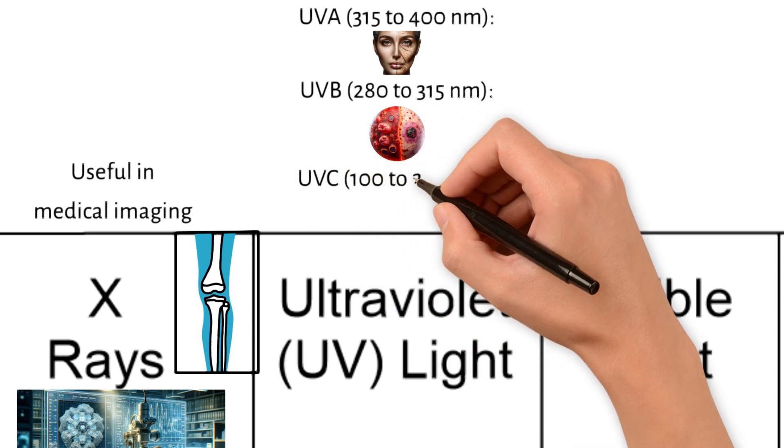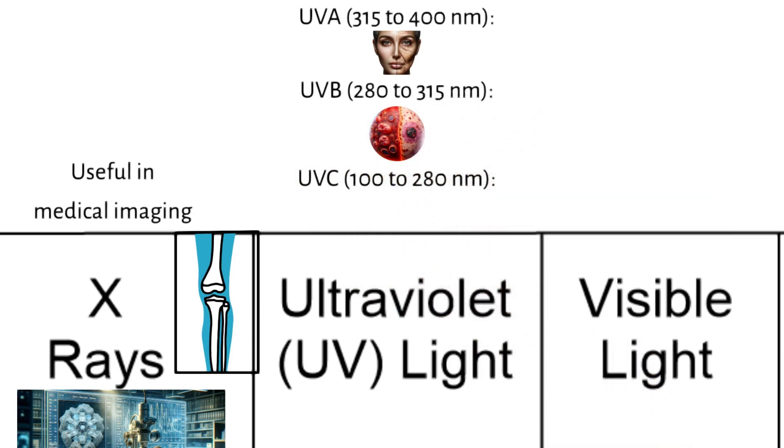UVC is 100 to 280 nanometers. It is the most energetic and dangerous form of UV light. It's almost entirely absorbed by the Earth's atmosphere, particularly the ozone layer, and does not naturally reach the Earth's surface. UVC is used for germicidal purposes in artificial sources.